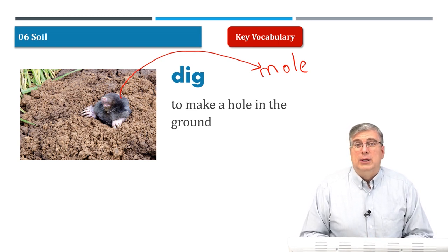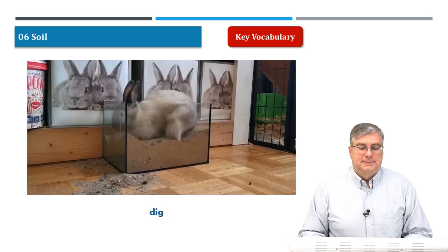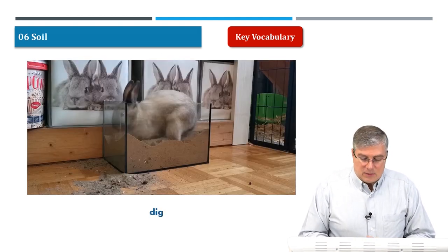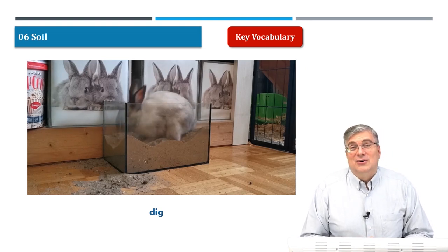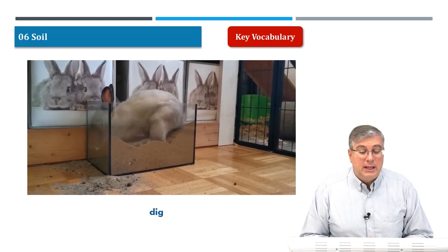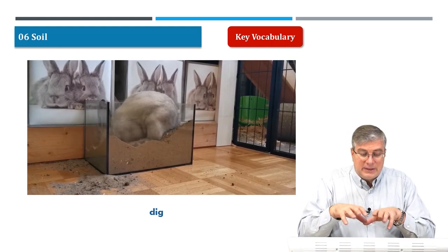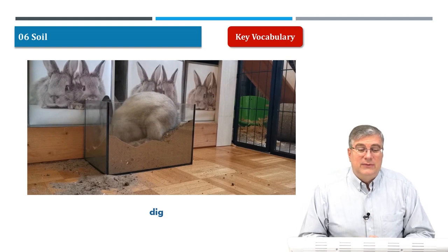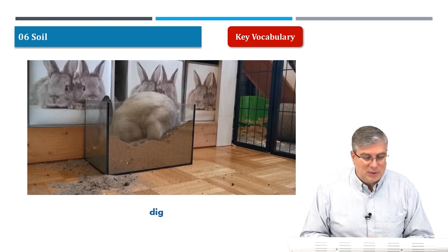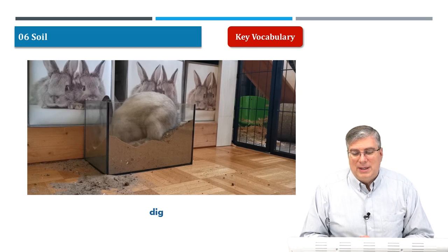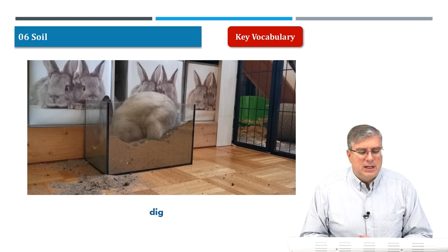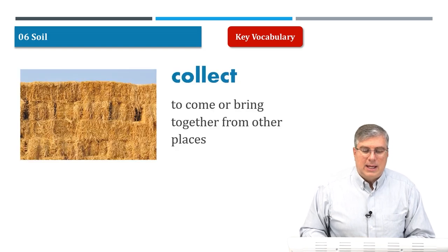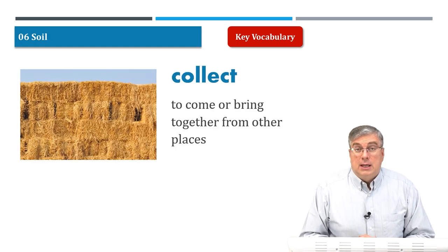Many animals like to dig in the ground. Your dog, if it gets the chance, might dig a hole. Here we have a video of a rabbit digging. Rabbits live underground — they make their home underground. They'll dig a little tunnel and live in a hole with their family. This rabbit looks like it's in a zoo, and they gave it some dirt because a rabbit's instinct is to dig.